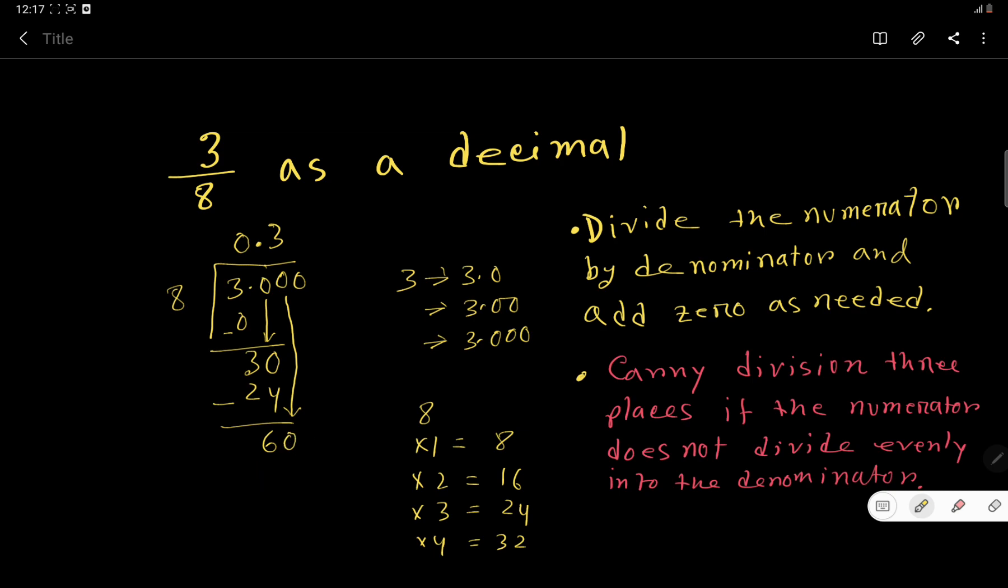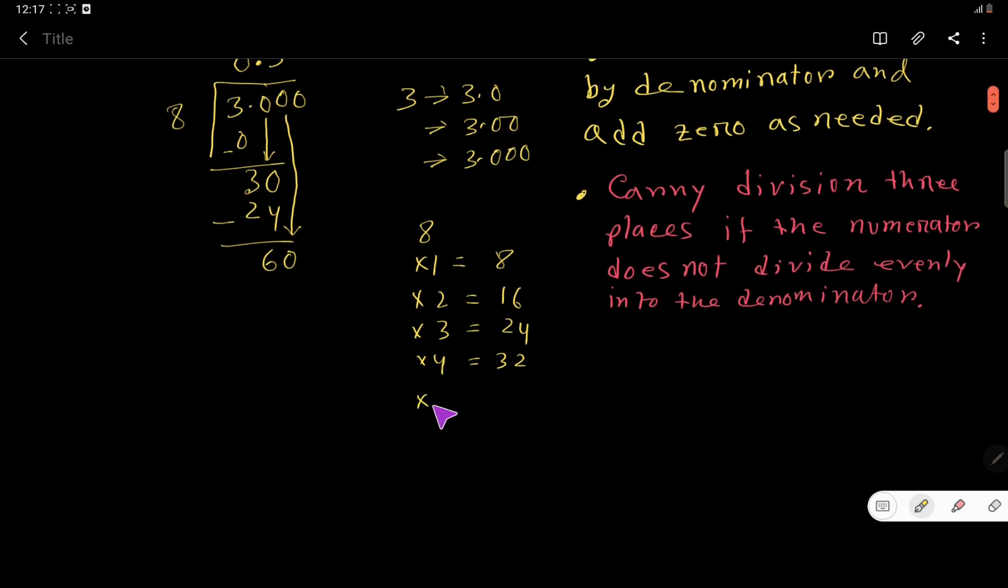Now 8 goes into 60 how many times? Using the multiplication table: 8 times 5 is 40, continuing through the table, 8 times 7 is 56. 56 is less than 60. Let's try 8: 8 times 8 is 64, which is greater than 60, so we stop at 7.